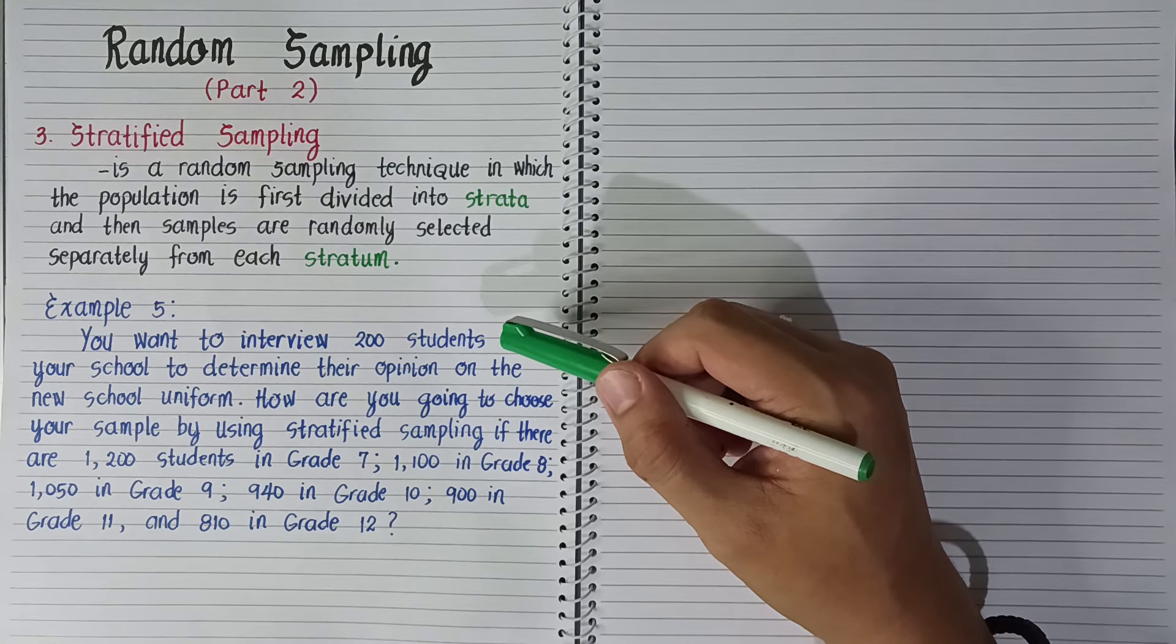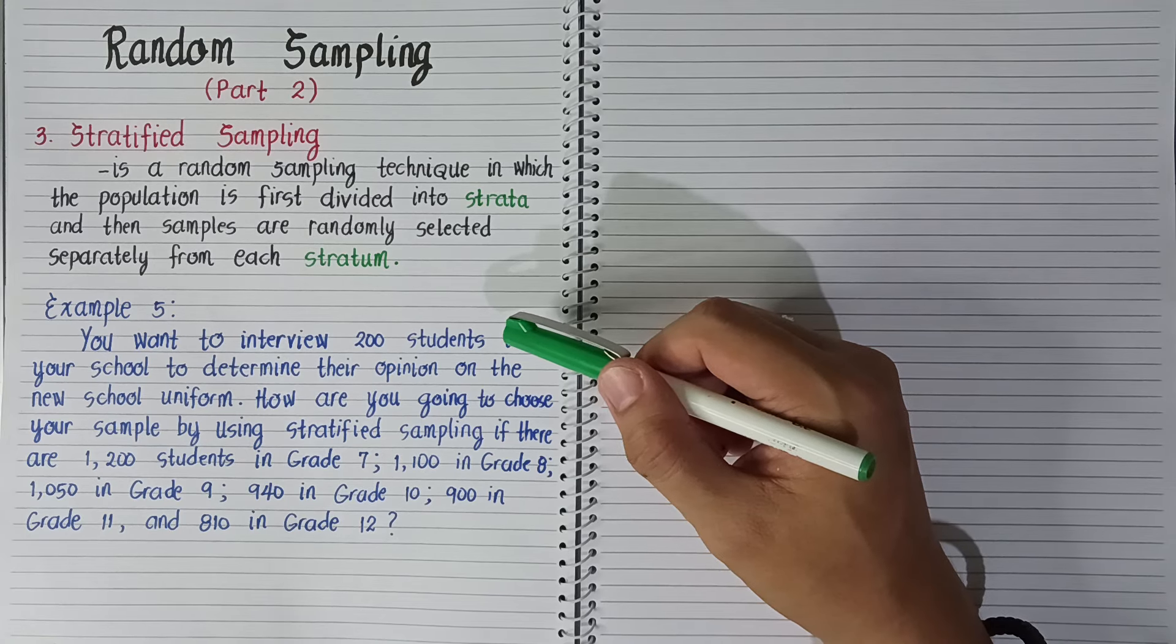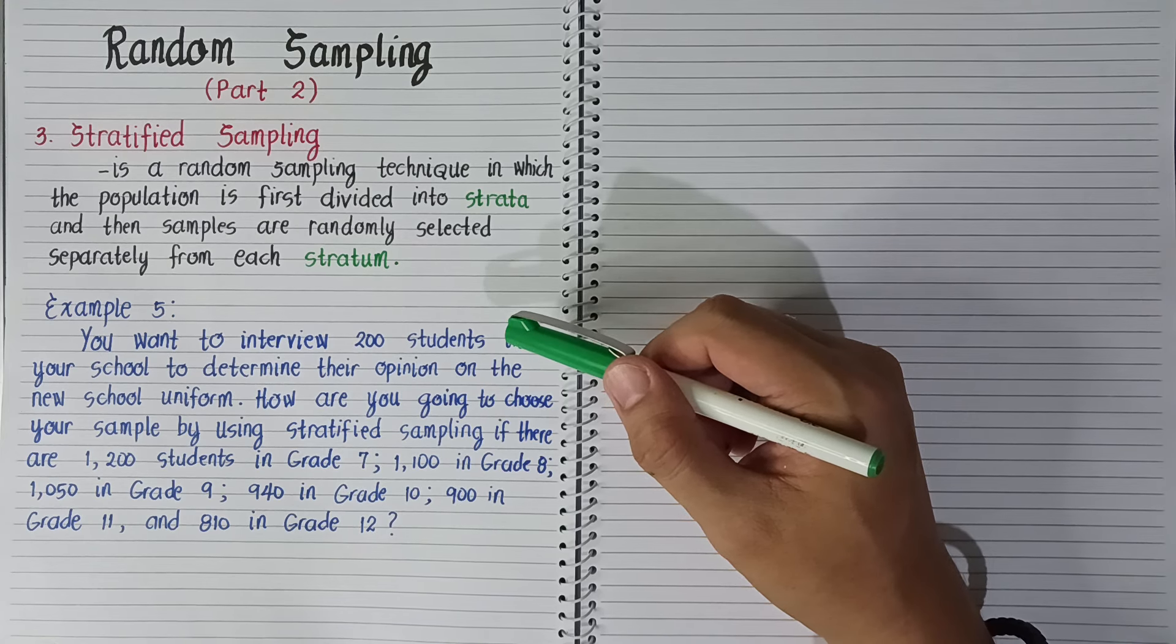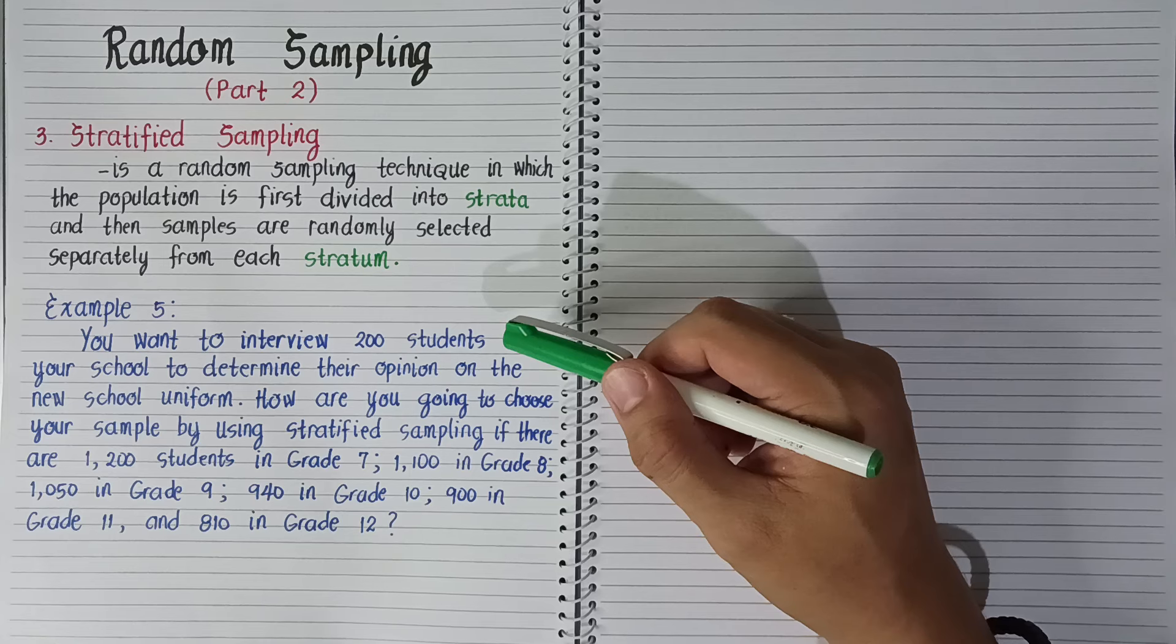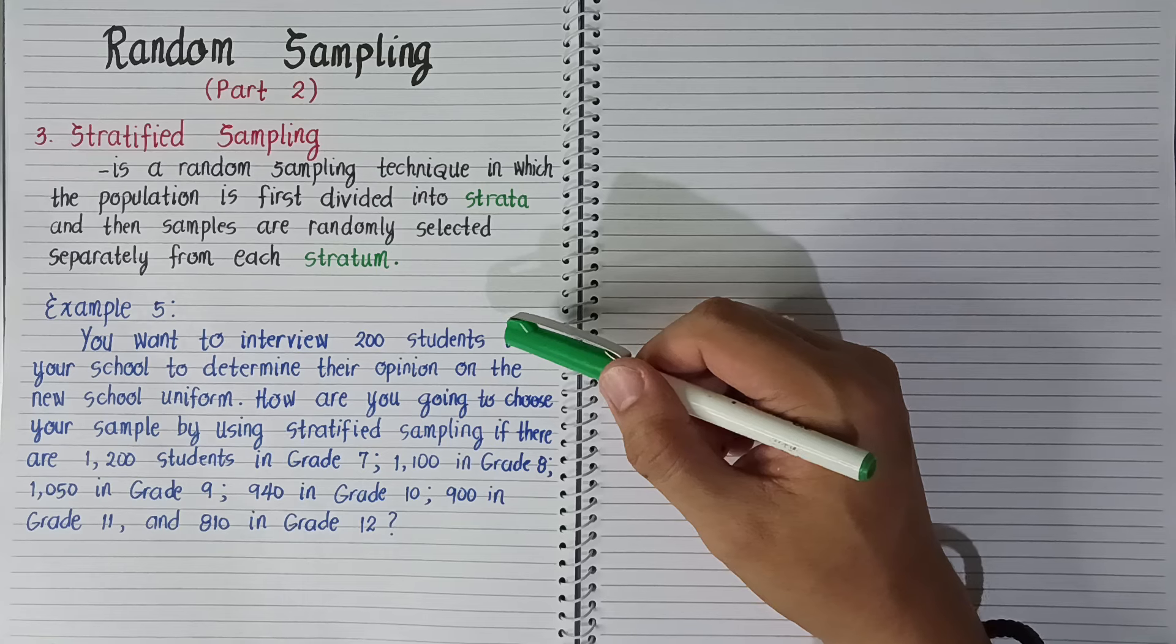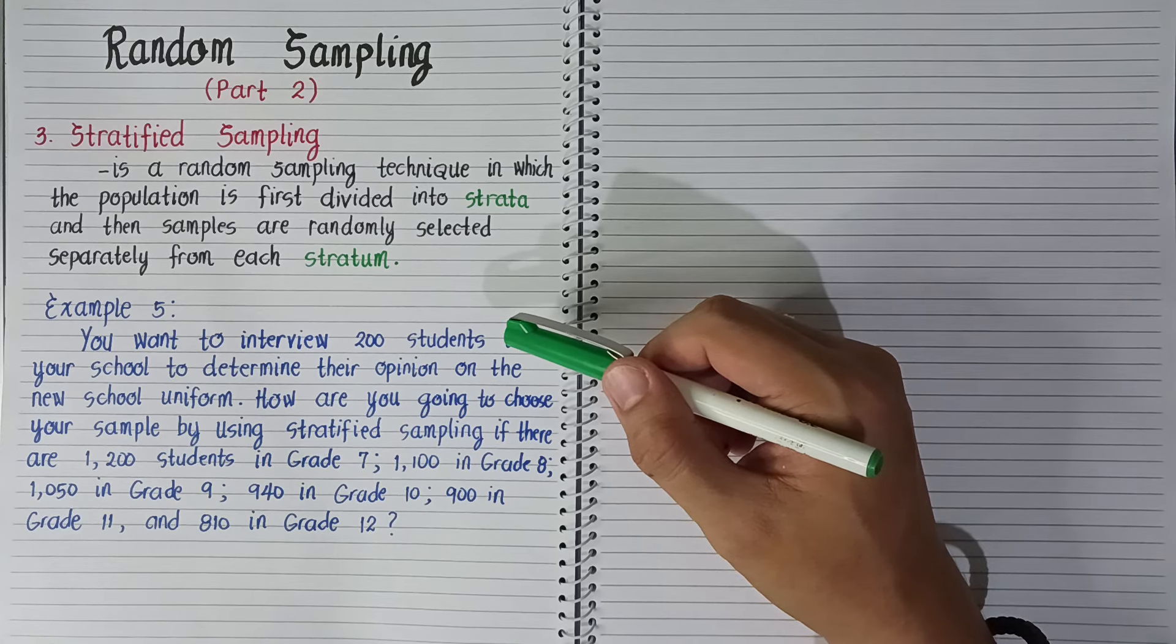Class, always remember that stratified sampling involves the division of the population into different strata or subgroups. It allows us to organize our groups based on their similar attributes as well as characteristics.